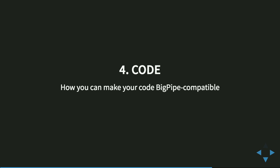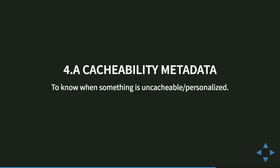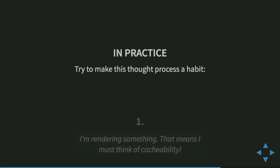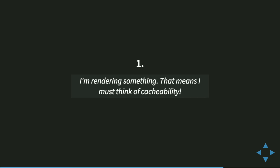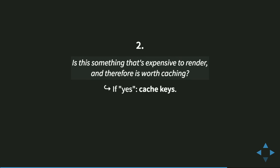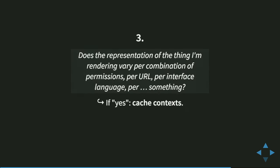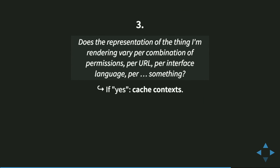To make your code not only BigPipe compatible but generically Drupal 8 compatible, you have to take care of some things. Whenever you are rendering something, you have to think of cacheability — that's the contract we are doing in Drupal 8. When it's something that's expensive to render and worth caching, you set cache keys on that object. If this is varying by something — combinations of permissions, URL, interface language, whatever — then you need cache contexts: user permissions, URL, and so on. Fortunately, Drupal adds many of these automatically, similar to HTTP's Vary header.